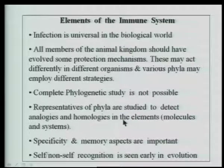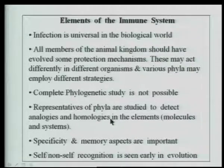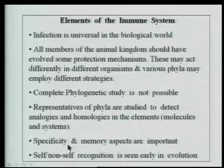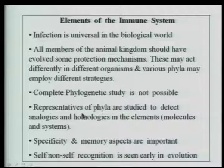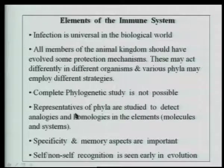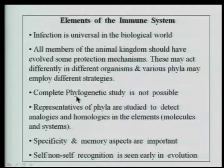The immune system has a variety of important elements and aspects. The specificity of the immune system, or the specificity of the response to the incoming pathogen or antigen, as well as the establishment of memory, are very important aspects to say that the immune system is competitive, as we know it in the mammalian world. The concept of self and non-self recognition is also very important and is seen very early in evolution.